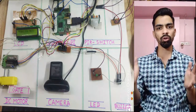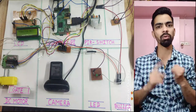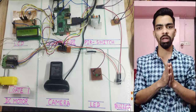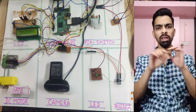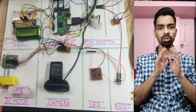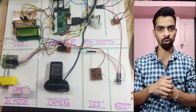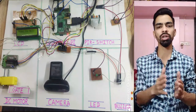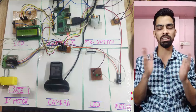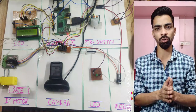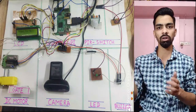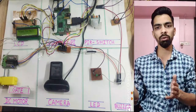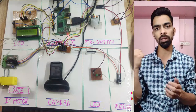Before starting, let me explain the project flow. We have hardware including an LCD, DC motor, camera, buzzer, LED, PIR sensor, and a switch. Whenever a visitor comes to your door, the LCD will display 'Press the Doorbell.' Once the visitor presses the doorbell, the camera opens and scans the image. If the visitor's image is already stored in the database, the face recognition algorithm detects whether the visitor is known or unknown. If unknown, the buzzer turns on and starts ringing.